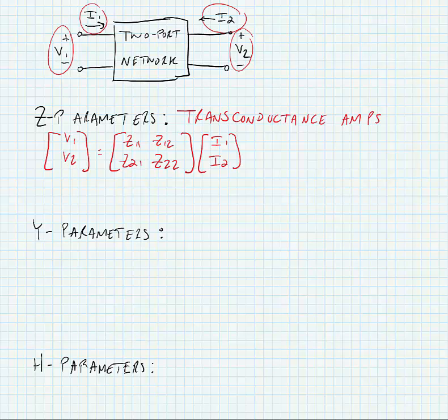In order to figure out what any one of these parameters are, we have to isolate the other parameter. For instance, we can find Z11 by setting the solution equal to V1 over I1 when I2 is equal to 0. Similarly, we could find Z12 by finding V1 over I2 when I1 is equal to 0.